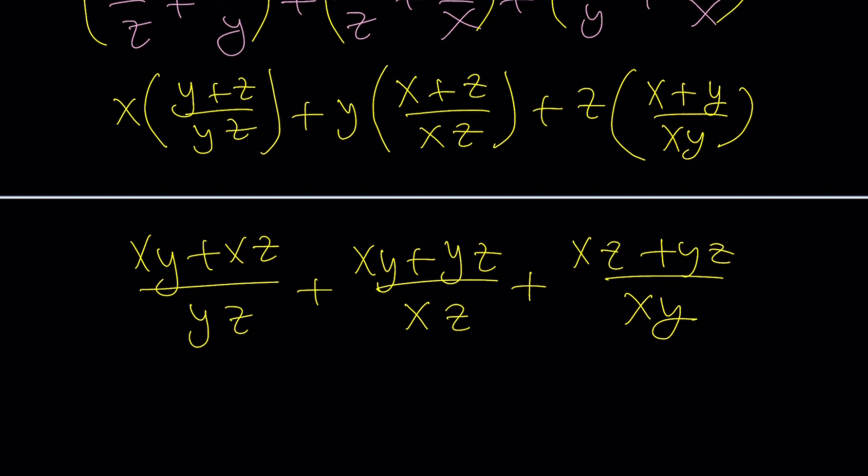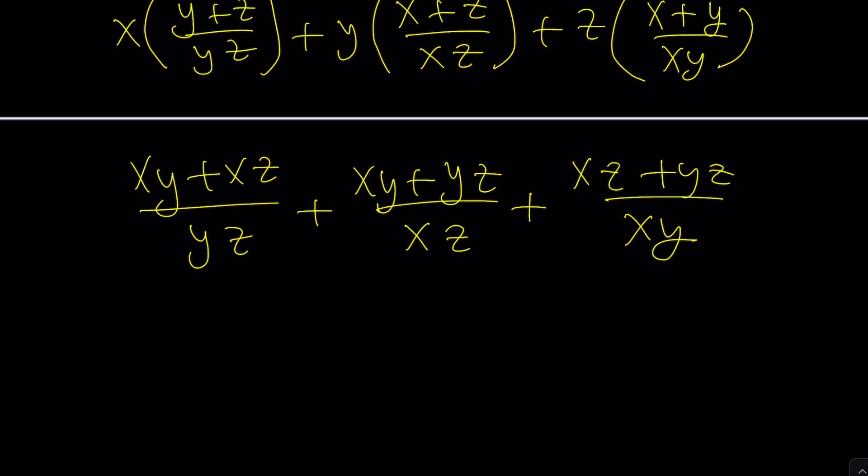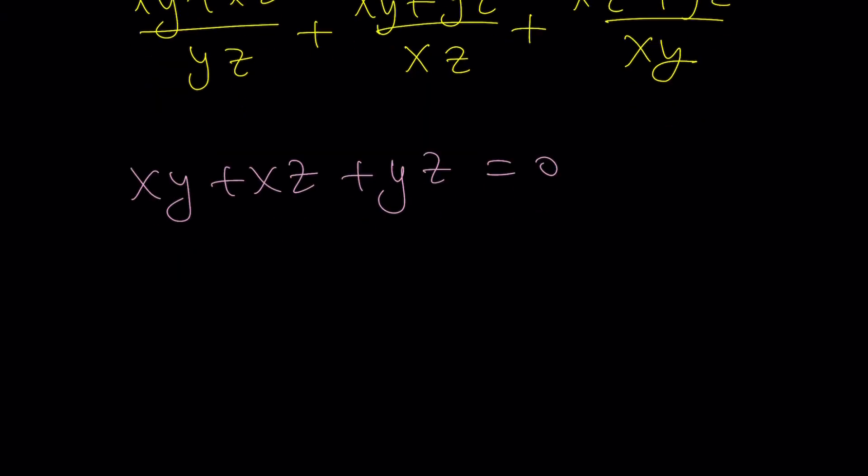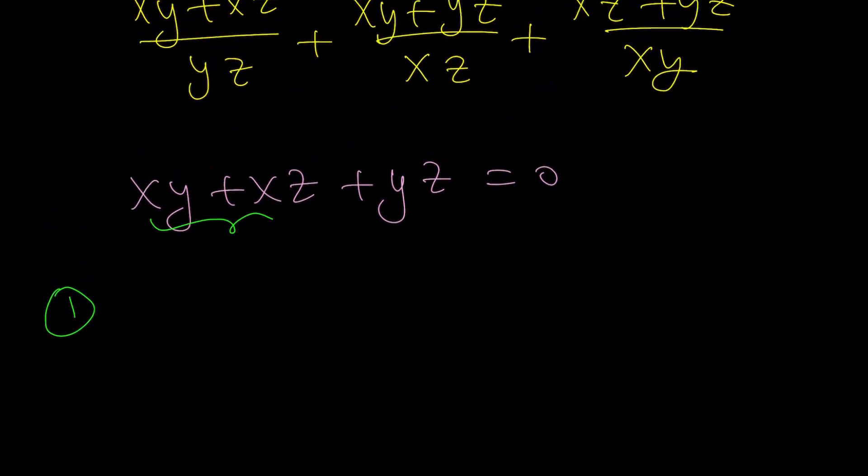Now, here's the beautiful part. If you consider the given expression, this one, right? Let's go ahead and rewrite it. We have xy plus xz plus yz equals zero. This gives us a lot of good things. Three good things. One of them, number one, is if you isolate these two, xy plus xz would be negative yz.